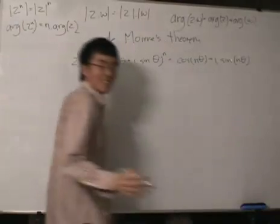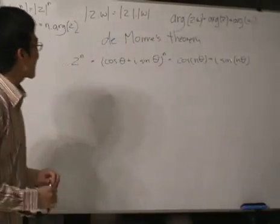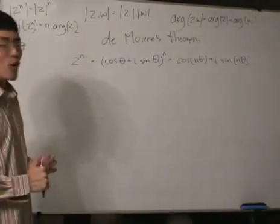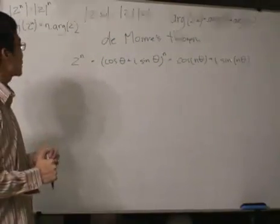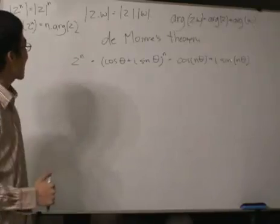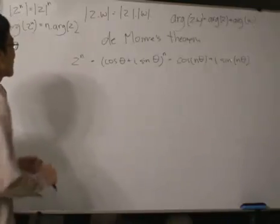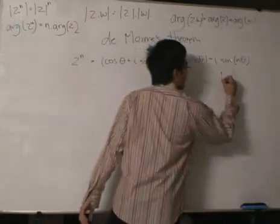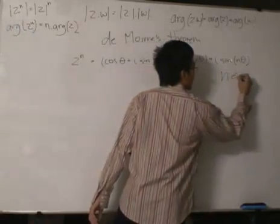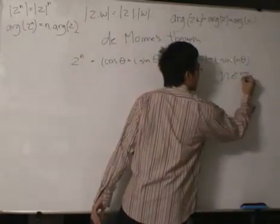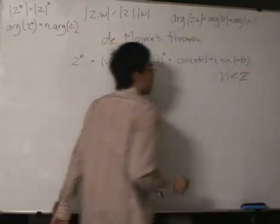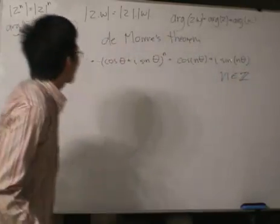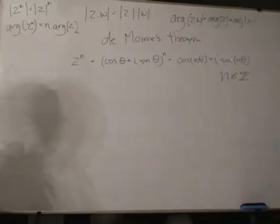But let's assume for a minute that Euler did not exist while we are doing complex numbers. I don't know which one came first, but let's say we don't have Euler's formula at our disposal. So we need to prove this for n in the set of integers — positive and negative.